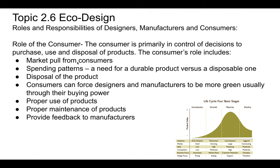Consumers have market pull — designers create products that the market wants. If consumers want things that are bad for the environment, that's what manufacturers produce; if they want environmentally friendly things, that's what gets made. Spending patterns matter: do you want a durable product versus a disposable one? For instance, a reusable water bottle versus a single-use plastic one.